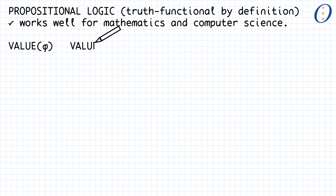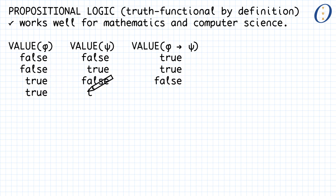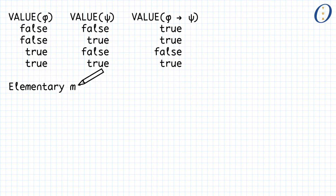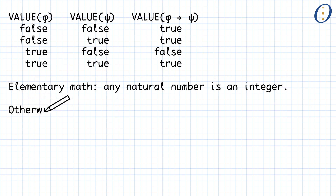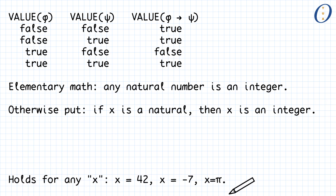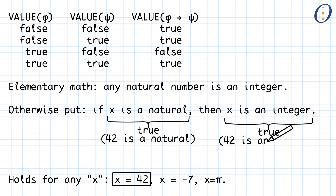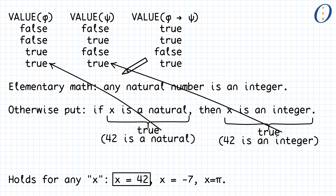Assuming you agree with the principle of truth-functionality, I will now convince you that the only reasonable truth table for implication is the one we have just seen. I will use a fact from elementary mathematics which you will agree to, no doubt: any natural number is an integer. Let us rephrase this slightly: if x is a natural, then x is an integer. You will agree that the statement holds for any value of x. In particular, the statement must be true for x equals 42, x equals minus 7, and x equals pi. For x equals 42, the antecedent is true because 42 is a natural number, and the consequent is also true because 42 is an integer. This explains the last line in the truth table — if you agree that any natural is an integer, then you must also agree that an implication with a true antecedent and a true consequent is true.